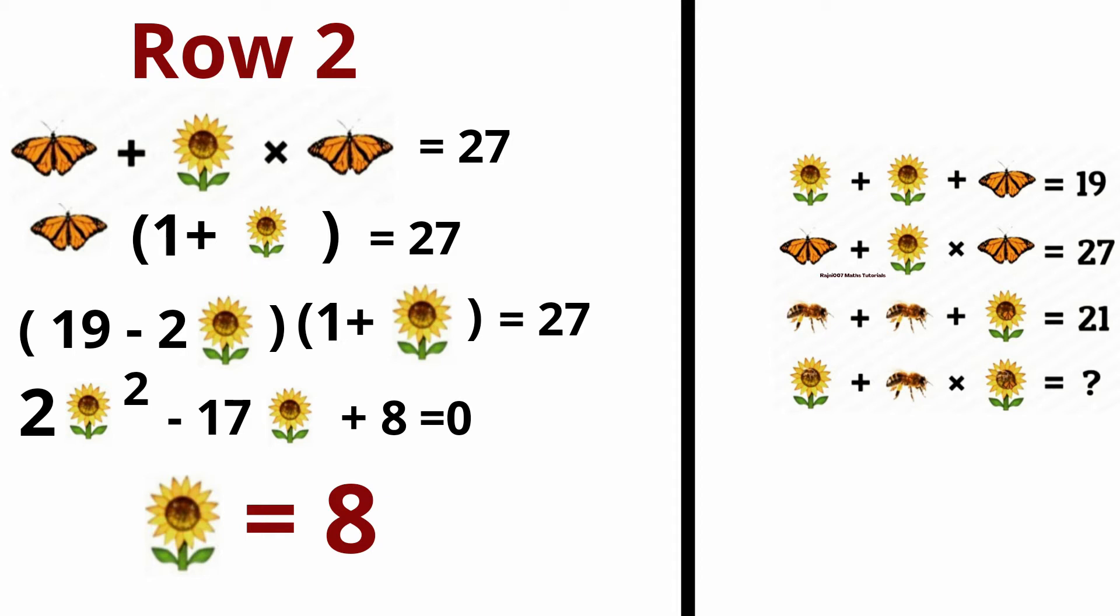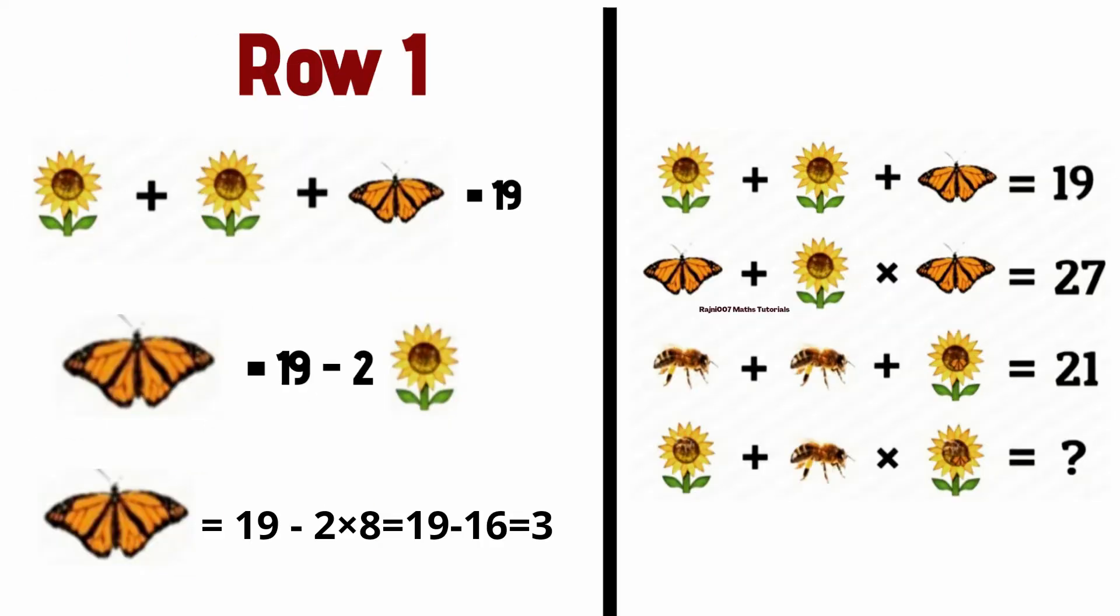This is quadratic equation. Two times sunflower square minus 17 times sunflower plus 8 equal to zero. We will solve this equation. What value will get here? Sunflower is 8.